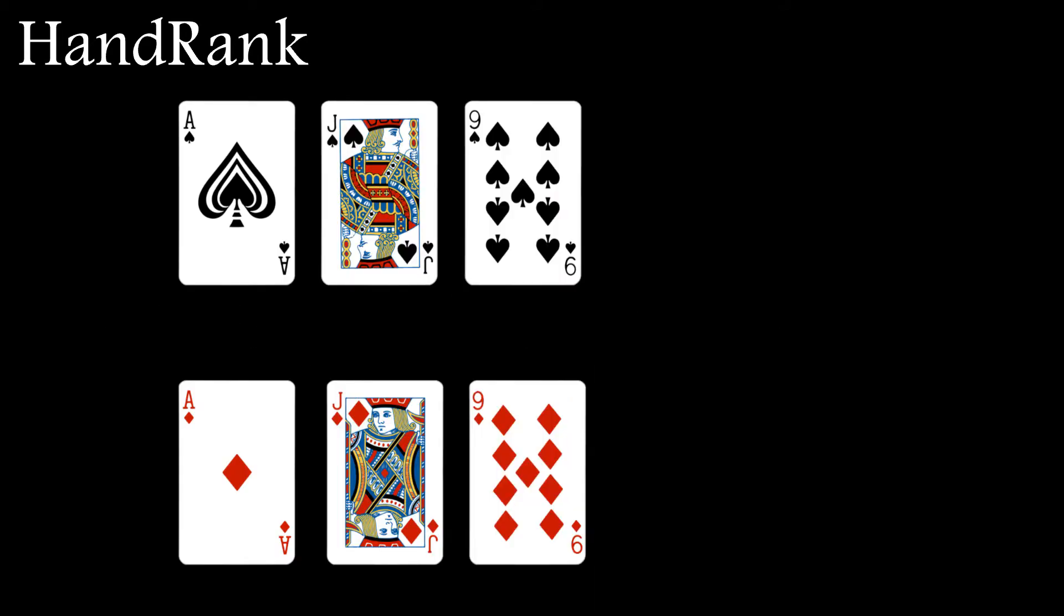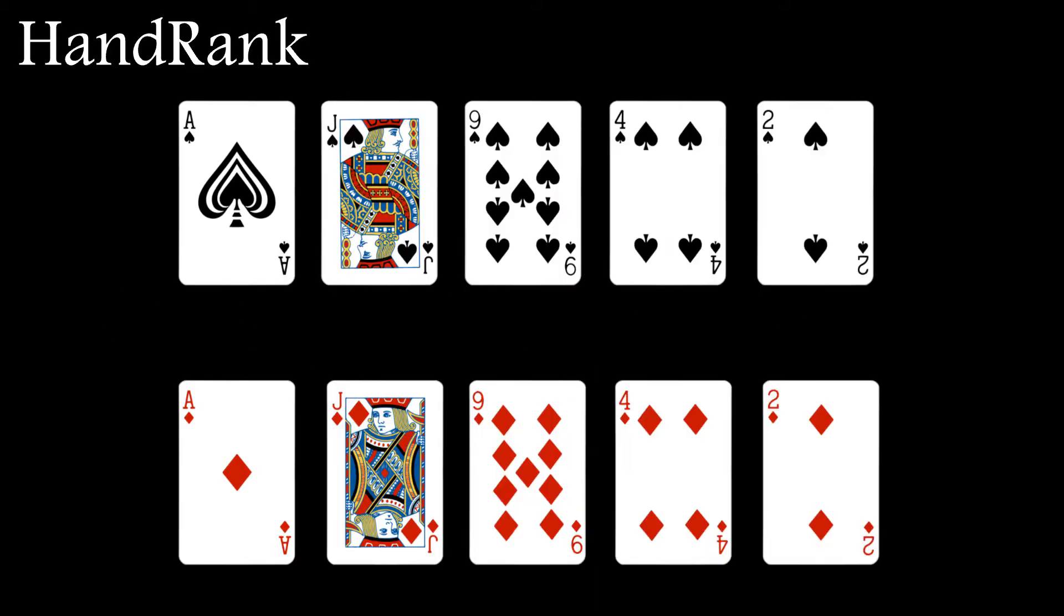This is because there are a lot of different hands with an equal ranking. These two flushes are different poker hands but have an equal ranking. So how do we use this information to reduce the size of the search space?